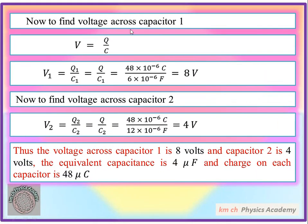To find voltage across capacitor 1, we use V1 = Q1/C1. Q1 = 48×10⁻⁶ C and C1 = 6×10⁻⁶ F. The powers of 10 cancel, and 48 divided by 6 equals 8. Therefore V1 = 8 volts across capacitor 1.